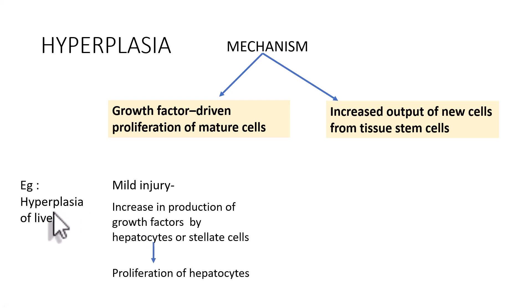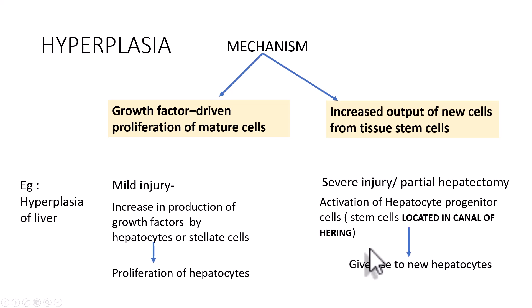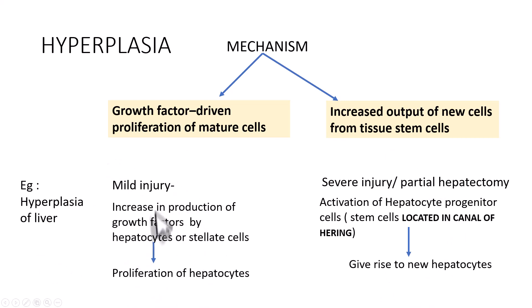If the injury is very severe — for example, partial hepatectomy — there is activation of the hepatocyte progenitor cells. Where are they located? They are located in the canal of Hering, and these progenitor cells give rise to new hepatocytes. So the first mechanism means increased output of new cells from tissue stem cells — new hepatocytes are being produced. Whereas in the second mechanism, there is proliferation of the existing hepatocytes. So hyperplasia can have either of these two mechanisms.